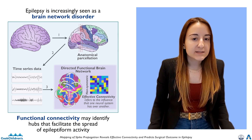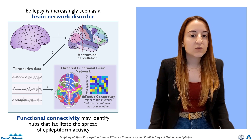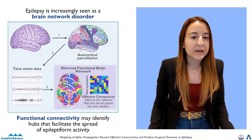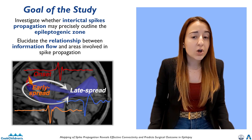Epilepsy is increasingly seen as a brain network dysfunction and can be investigated with network control theory. This theory involves assessing the directionality of causal dependencies among time signals to determine how different brain areas communicate with each other via functional pathways. Our goal is to study the relationship between information flow and areas involved in spike propagation, and to investigate if the onset of spike propagations can precisely identify the epileptogenic zone.